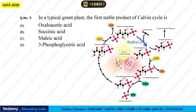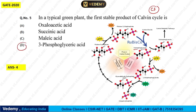The next question: in a typical green plant, what is the first stable product of the Calvin cycle (C3 cycle)? Options are oxaloacetic acid, succinic acid, malic acid, and 3-phosphoglyceric acid. The first stable compound formed in the Calvin cycle is 3-phosphoglycerate, also called 3-phosphoglyceric acid. The correct answer is option 4.